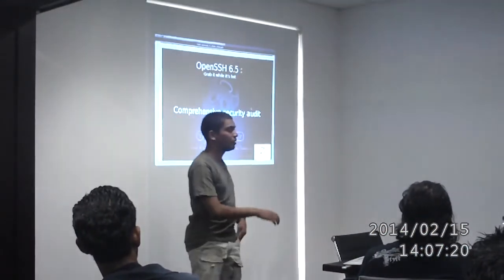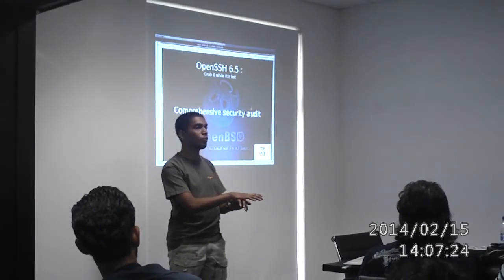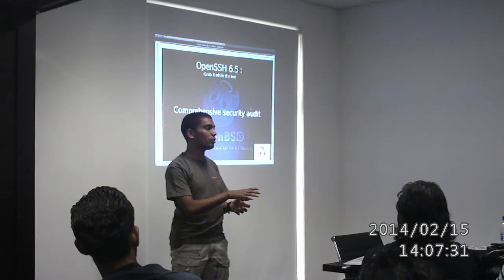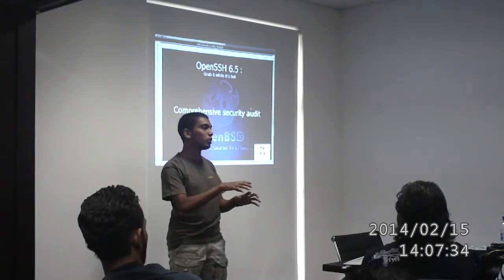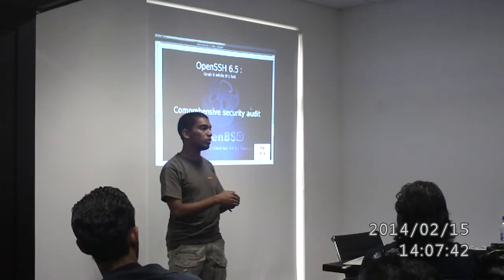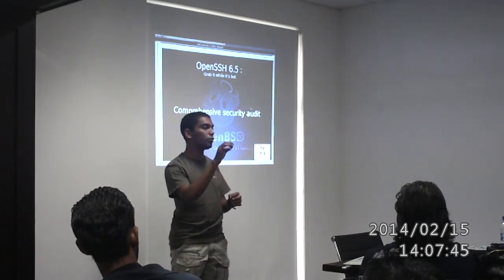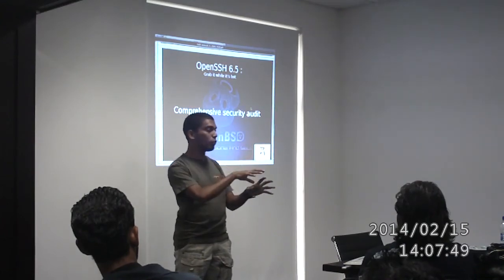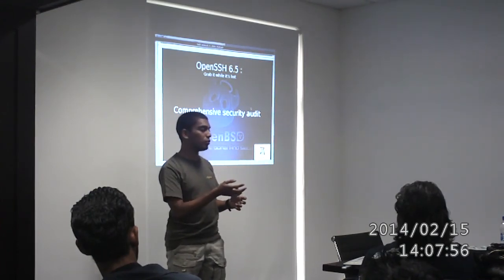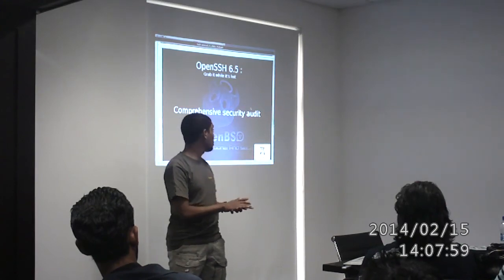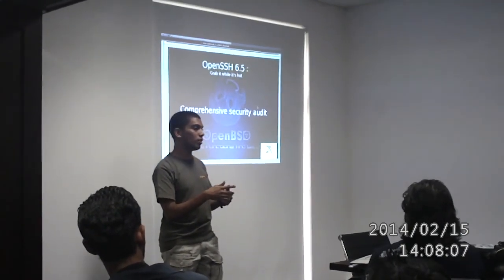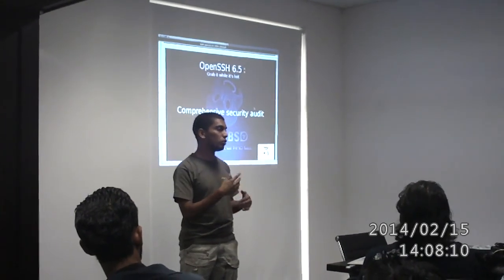We did a full security audit of almost the entire OpenSSH code base. I've fixed around a dozen small security issues that could potentially leak information back to an attacker. I went through the whole OpenSSH code line by line to find vulnerabilities inside the source code, and I fixed around 12 of them. There are still more fixes to do. I don't have as much time as I'd like to work on this, but it's an ongoing process. OpenSSH 6.6 is going to have even more fixes.